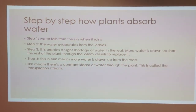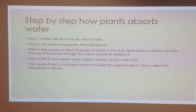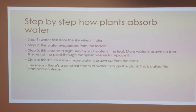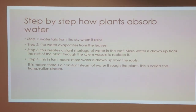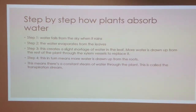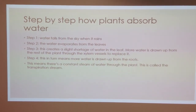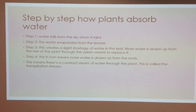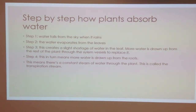Transpiration is the loss of water from the plant. Transpiration is caused by the evaporation and diffusion of water from inside the leaves. This is how it happens: first, the water evaporates from the leaves. This creates a slight shortage of water in the leaves, and more water is drawn from the rest of the plant through the xylem vessels to replace it.